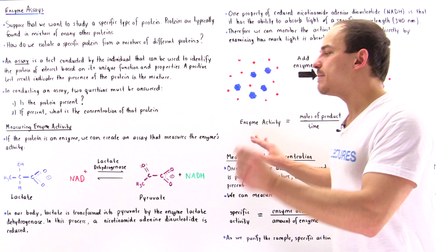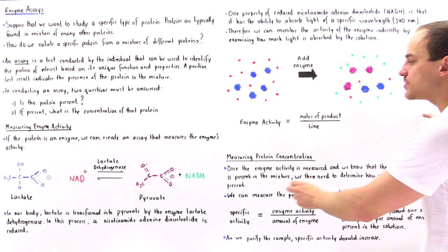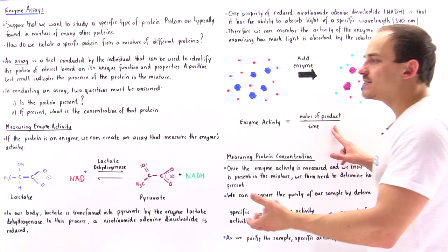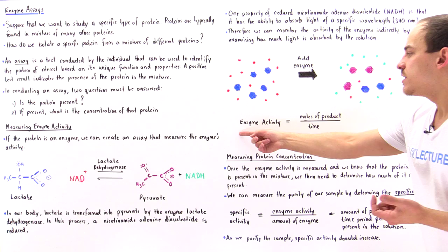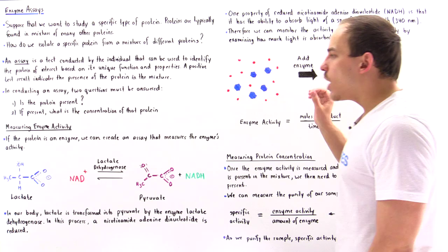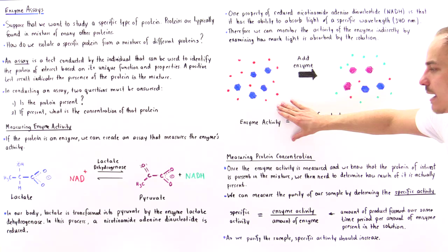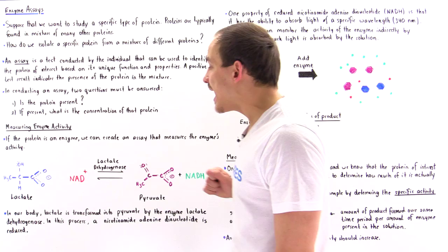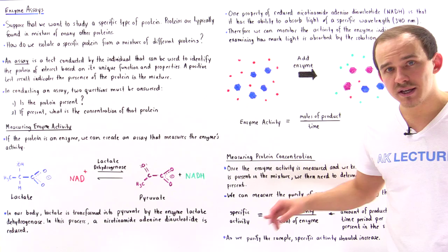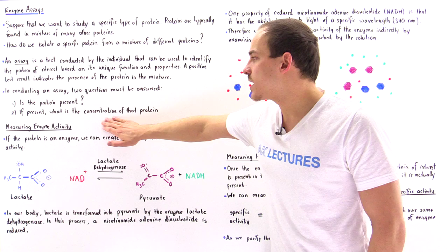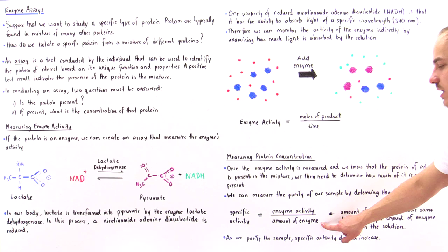So what exactly is the enzyme activity? The enzyme activity is the number of moles of product produced — in this case, the moles of NADH produced per unit of time, whether that's a minute, five minutes, and so forth. So enzyme activity equals moles of product divided by time. Once we know the enzyme activity, we can calculate the concentration of that protein. And once we know both the enzyme activity and the concentration of lactate dehydrogenase, we can calculate the specific activity — which is the ratio of enzyme activity to the amount of enzyme.